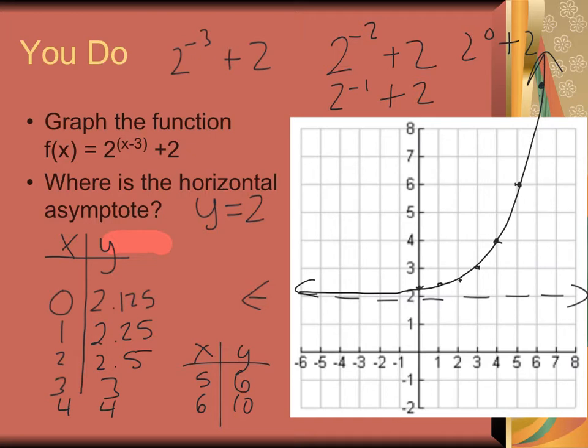Yeah, we ended up plotting a lot of points there, but it gave us a good idea of what this graph looks like. It's kind of hard to tell when they're all scrunched together here, especially when it's, like, that's tough to do 2 to the 2 1/8 or, you know, 2 1/4. It's tough to plot those accurately. So it's nice to get to some of those bigger numbers, but we know it's going to get super close to our horizontal asymptote, and it's going to continue to rise up. Awesome. Let's try one more.